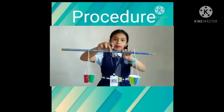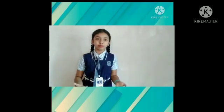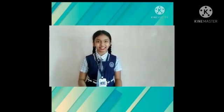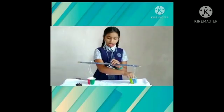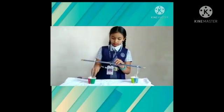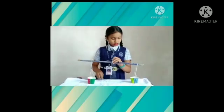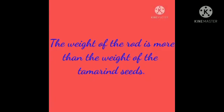The common balance works on the principle of movement of waves. When the waves become balanced, equilibrium is attained. In one cup I am putting one rod and in another cup I am putting some tamarind seeds. The rod is very much greater in weight than the tamarind seeds.